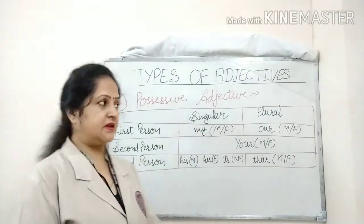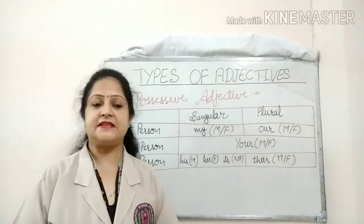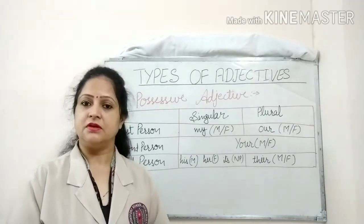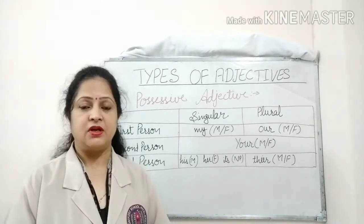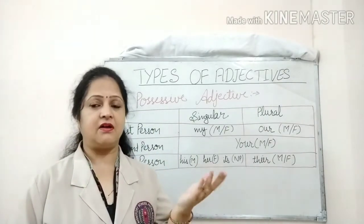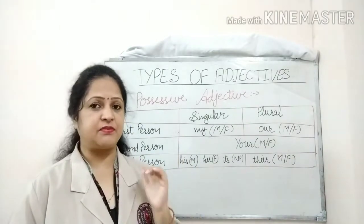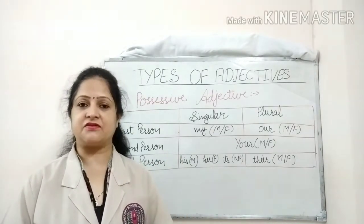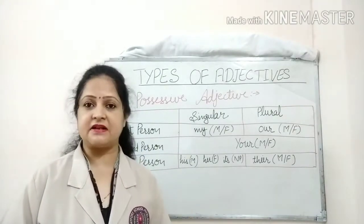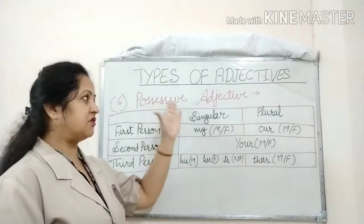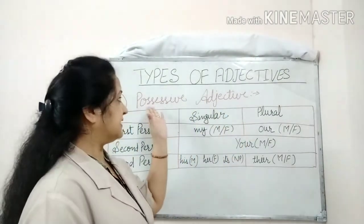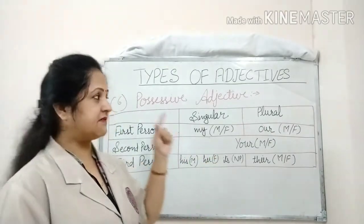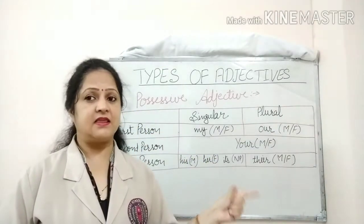Our last adjective is possessive adjective. Possessive adjective shows that something belongs to somebody — it tells us about ownership. Possessive adjectives are also possessive pronouns. When these possessive pronouns are followed by a noun, they function as possessive adjectives, just like demonstrative and interrogative adjectives.